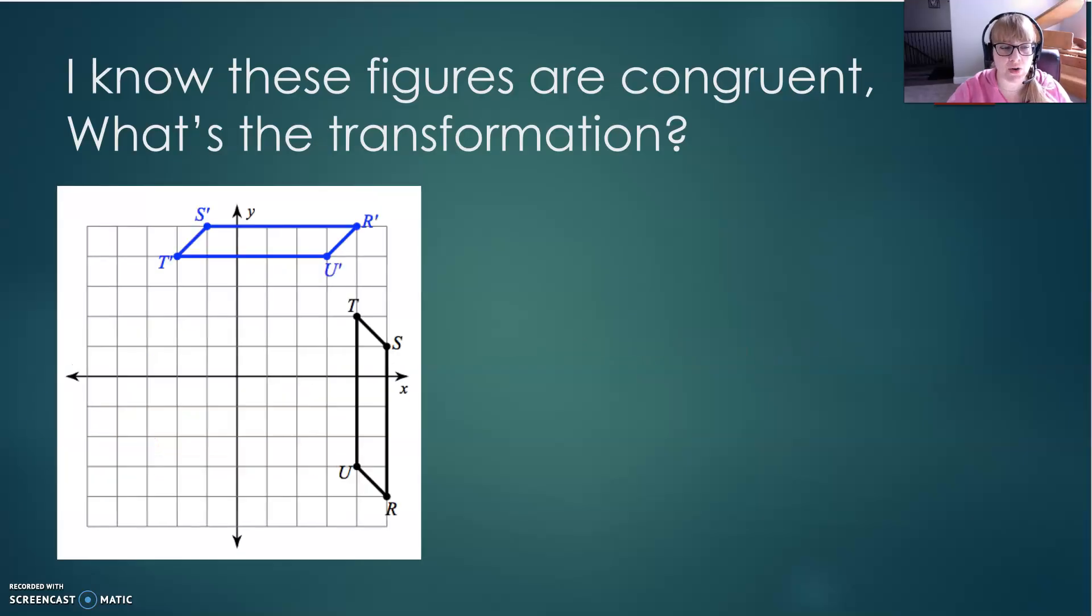Again, I know these two figures are congruent. So how did TSRU become figure T' S' R' U'? Can you figure out what makes that transformation? That would be a rotation going counter-clockwise 90 degrees. Notice that this was a vertical line, TU, but after the rotation, it is now a horizontal line, T' U'. That's a clue that it's probably a rotation when we see some of those changes.